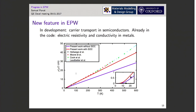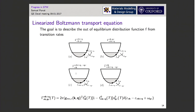Finally, I want to present a new feature we are working on in EPW, currently in development: carrier transport in semiconductors. Already in the code you have the possibility to compute electrical resistivity or conductivity in metals, based on the α²F Eliashberg transport spectral function — for example the resistivity of lead, which with spin-orbit coupling gives decent agreement with experiment. What we are now working on is the linearized Boltzmann transport equation, describing the out-of-equilibrium distribution occupation function based on transition rates expressed in terms of electron-phonon matrix elements computed efficiently using EPW.